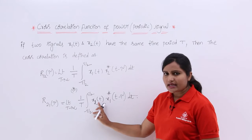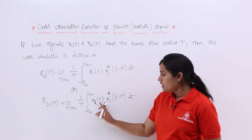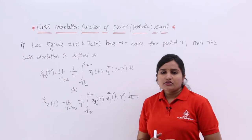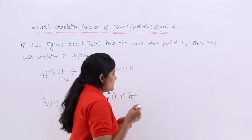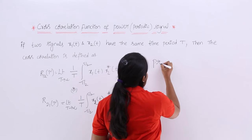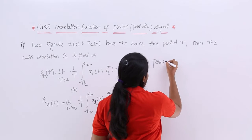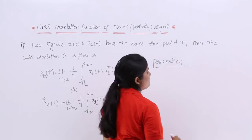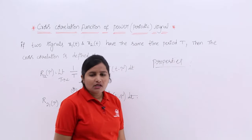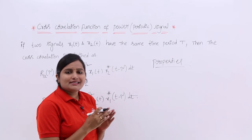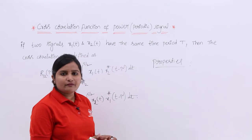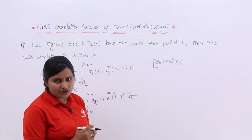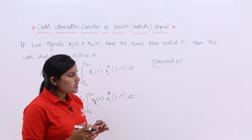You can write it as x2(t + τ) · x1*(t) dt as well. Now coming to the properties of the cross correlation function of power signals — we follow the same properties we established for the cross correlation function of energy signals.